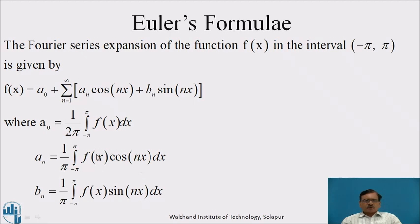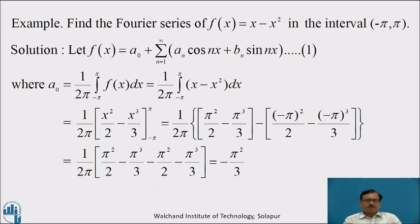These Euler's formulae are used to calculate the three constants a naught, aₙ and bₙ. Now we will see the example: find the Fourier series of f(x) equal to x minus x square in the interval minus pi to pi.